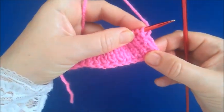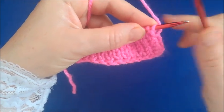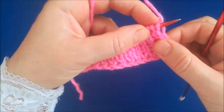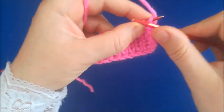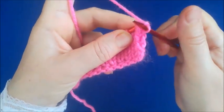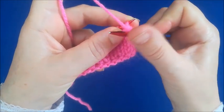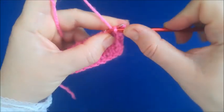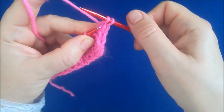Şimdi normalde düz ilmekle başlamam gerekiyor, ama ben bunu örmüyorum. Şu şekilde alıyorum ve sıkılaştırıyorum ilmeğimi, bol kalmaması için. İpimi sıkı tutuyorum. Ve ters örgüyle devam ediyorum.